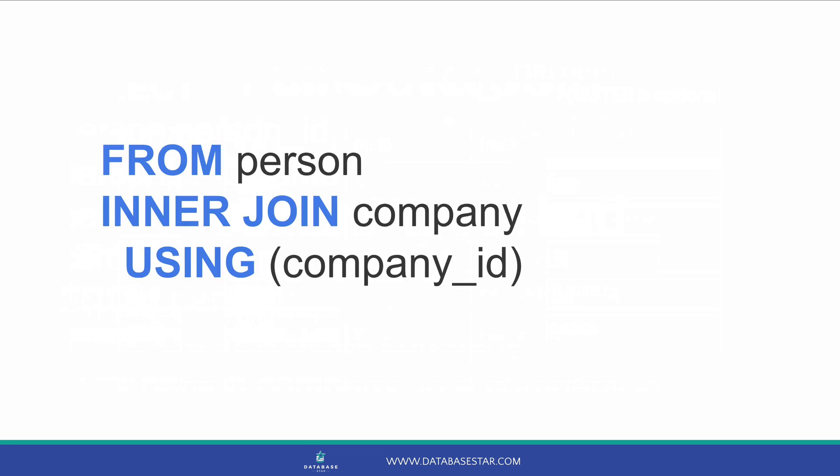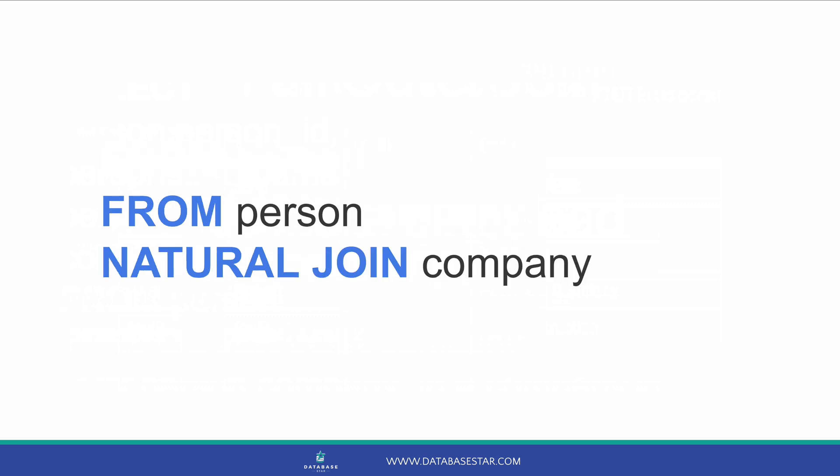The next tip is about other join keywords. There are some other keywords that let you join tables together. One is the using keyword, which lets you specify one field name and the tables are joined on that field. However, I would advise against using it, because your query will break if you change field names, or if you have the same field name but they mean different things. I recommend using the on keyword and specifying the fields by name. The other keyword is a natural join, which joins two tables without specifying what fields they join on — the database joins on all columns with the same name. I also advise against this, as it restricts you to matching field names and risks breaking if you adjust column names. Stick to using the inner join and specifying the field names.